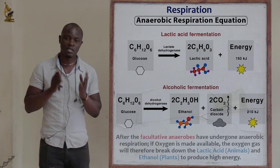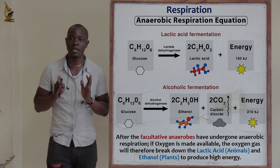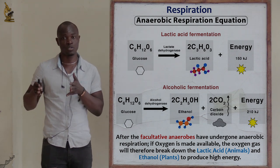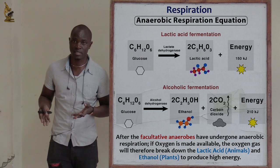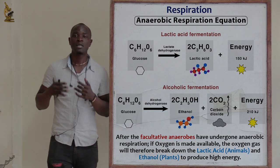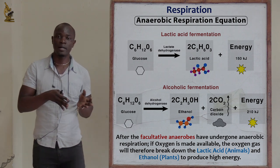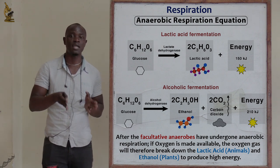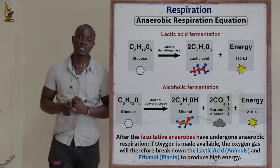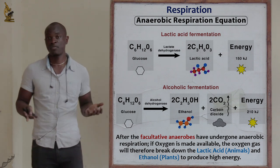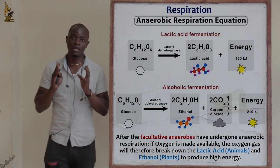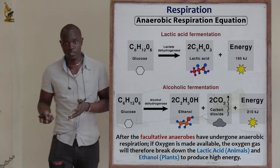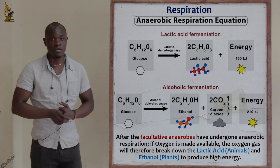Ethanol and lactic acid, if they accumulate in the body, are going to be poisonous and will slowly poison the cells. Therefore, most facultative organisms thrive best when oxygen is available. However, facultative anaerobes do survive whether oxygen is available or not.